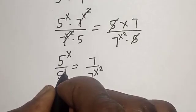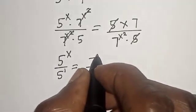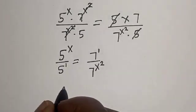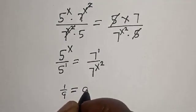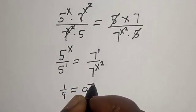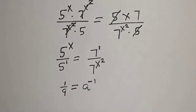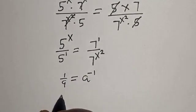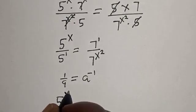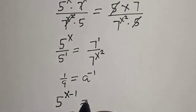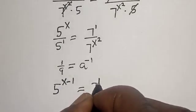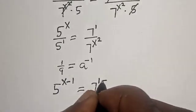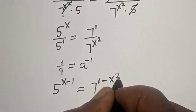This is also raised to the power of 1, and this is raised to the power of 1. Then, if you have 1 over a, this is equal to a raised to the power of minus 1. So this becomes 5 raised to the power of x minus 1 is equal to 7 raised to the power of 1 minus x squared.